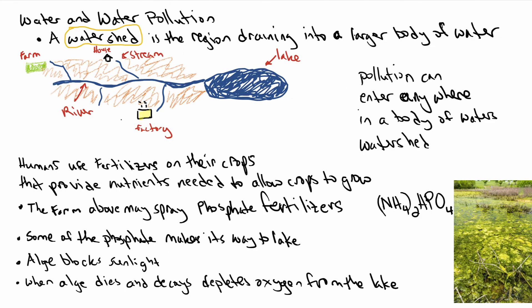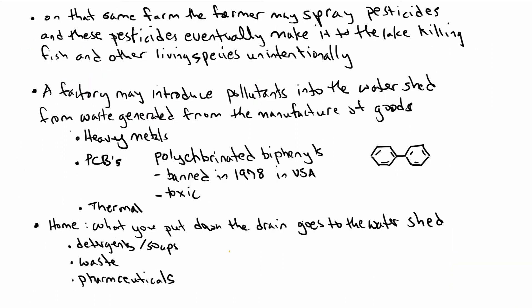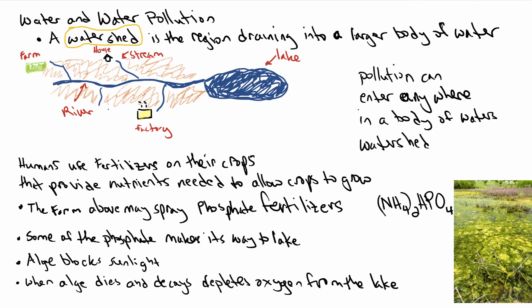Looking at the factory, it may introduce pollutants into the watershed from waste generated in the manufacture of goods. These can include heavy metals and, in the past, polychlorinated biphenyls (PCBs), which were banned in 1968 and are very toxic. Factories can also introduce thermal pollution by heating the water — for example, when cooling parts they're manufacturing.